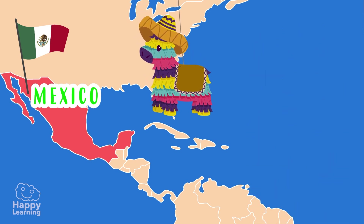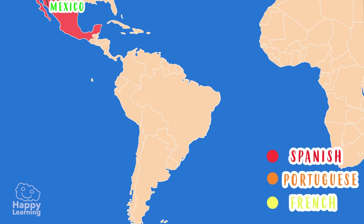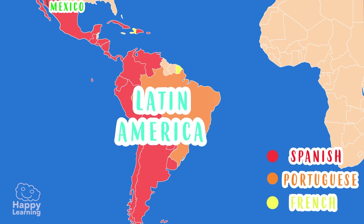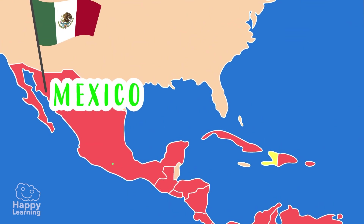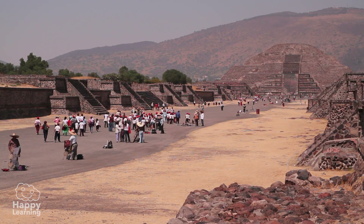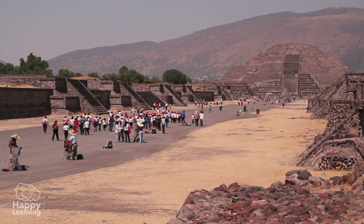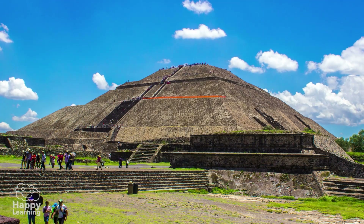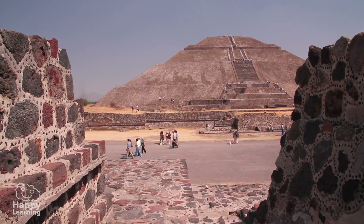This country, Mexico, marks the beginning of the so-called Latin America. It is called Latin America because from Mexico on down, almost every country speaks Spanish, and Spanish comes from Latin — hence the name Latin America. The capital of Mexico is Mexico City. And yes, what you see here are pyramids, just like the ones in Egypt — these are the pyramids of Teotihuacan.